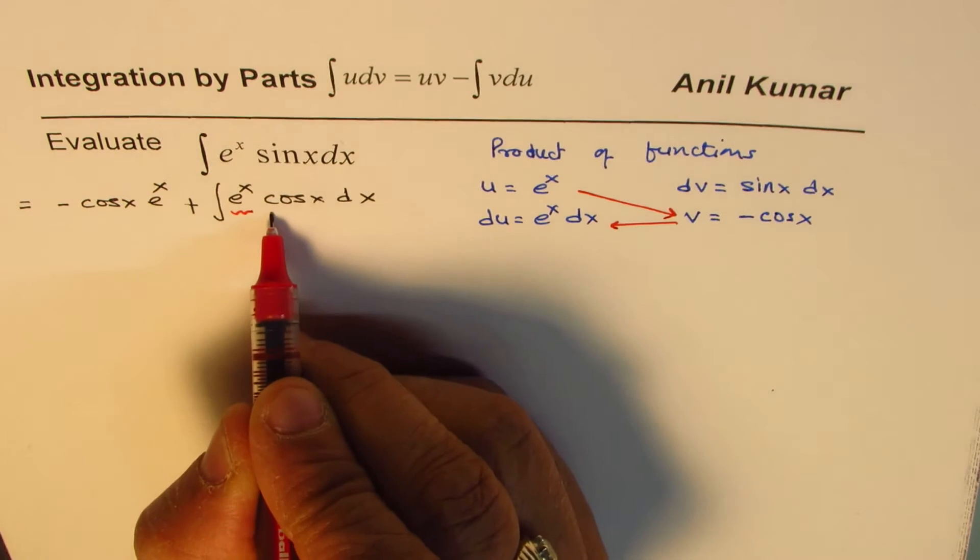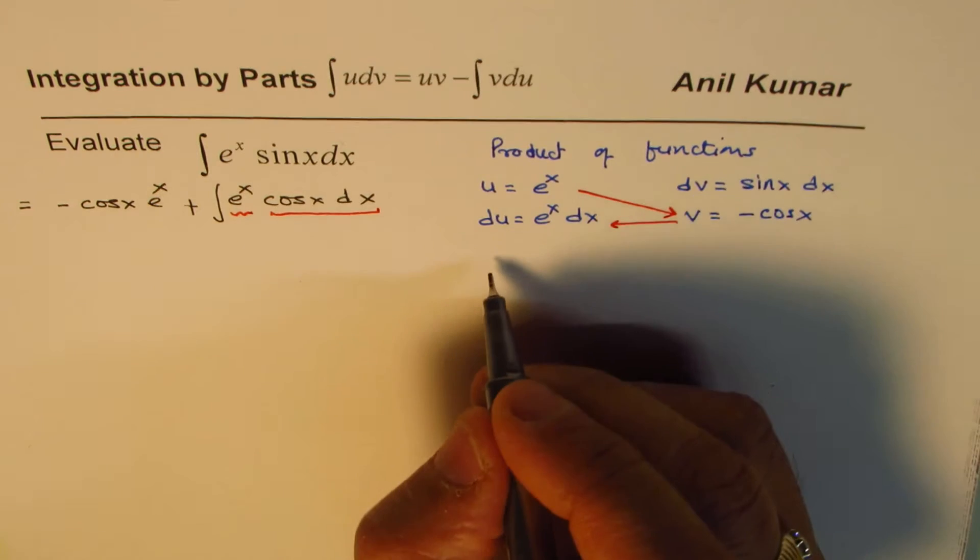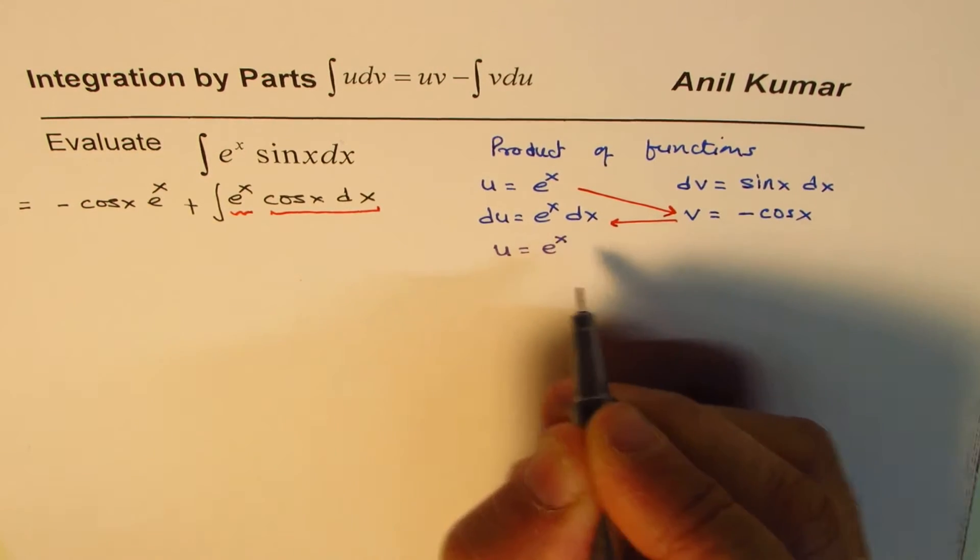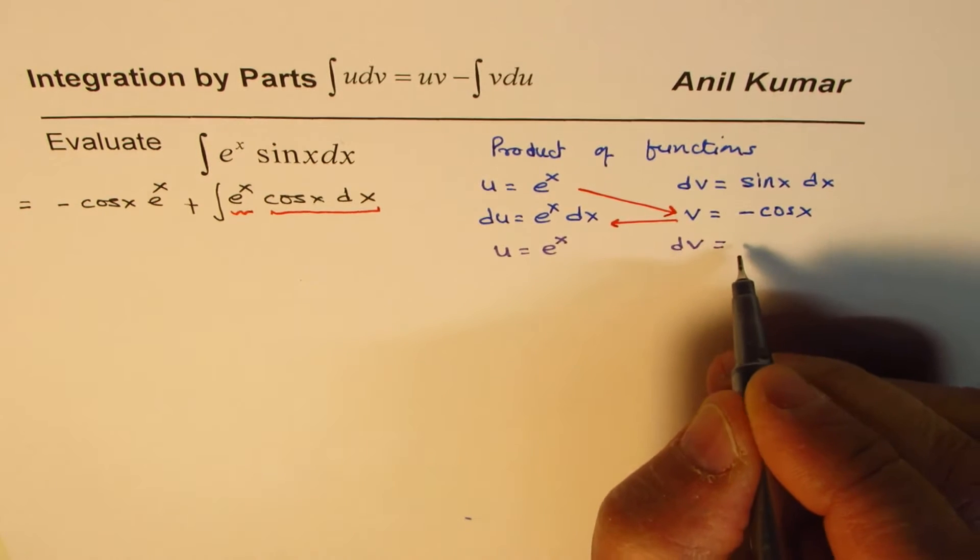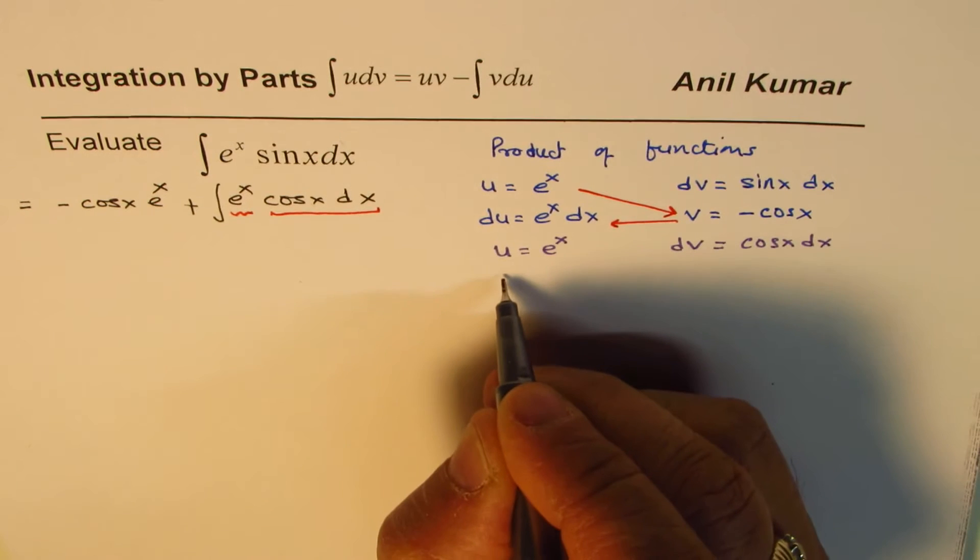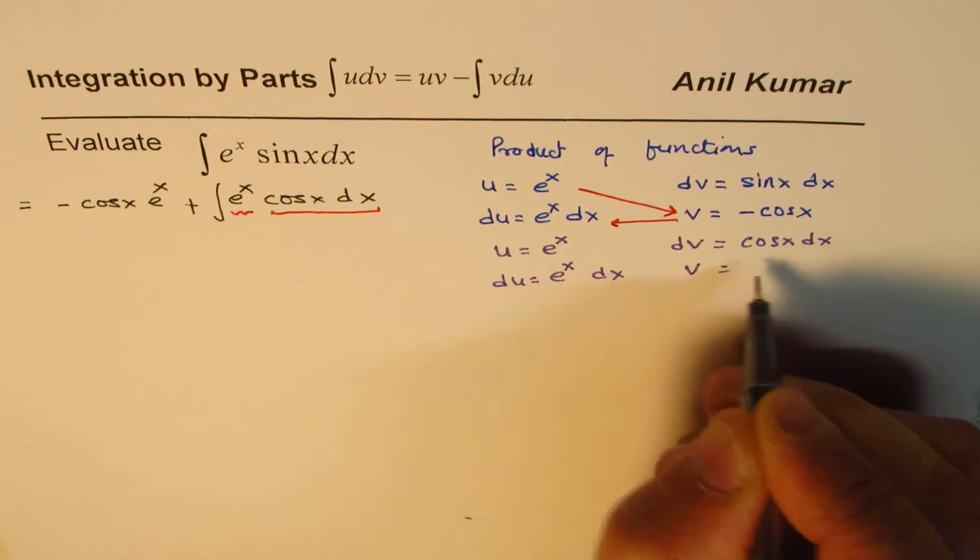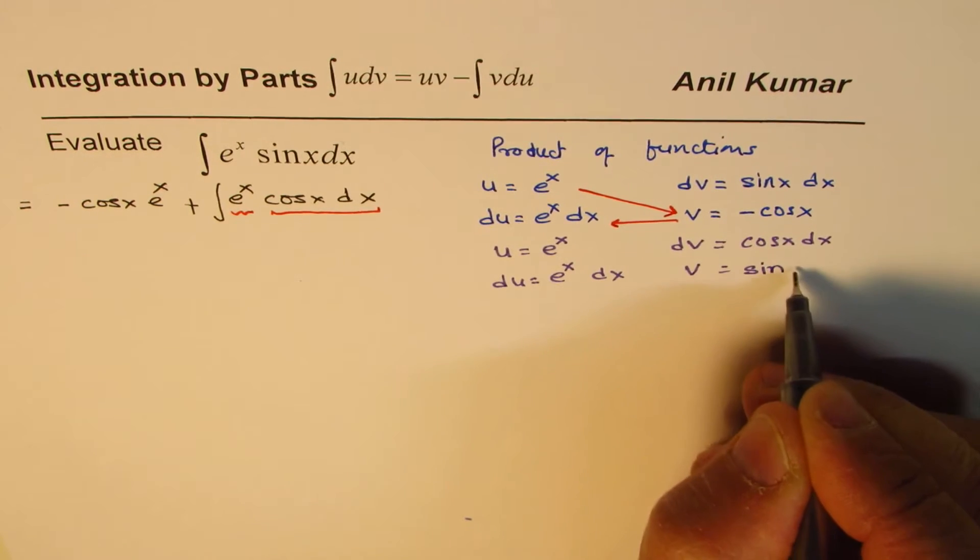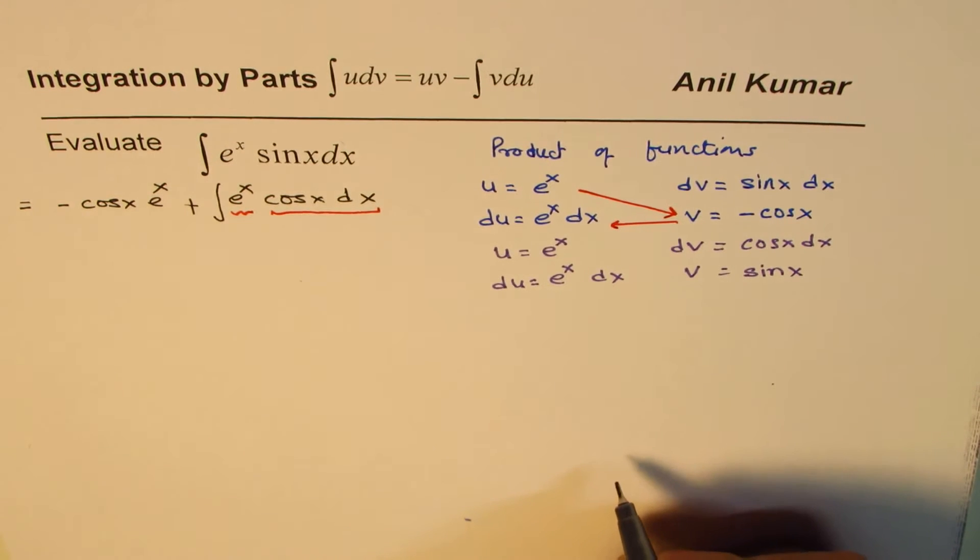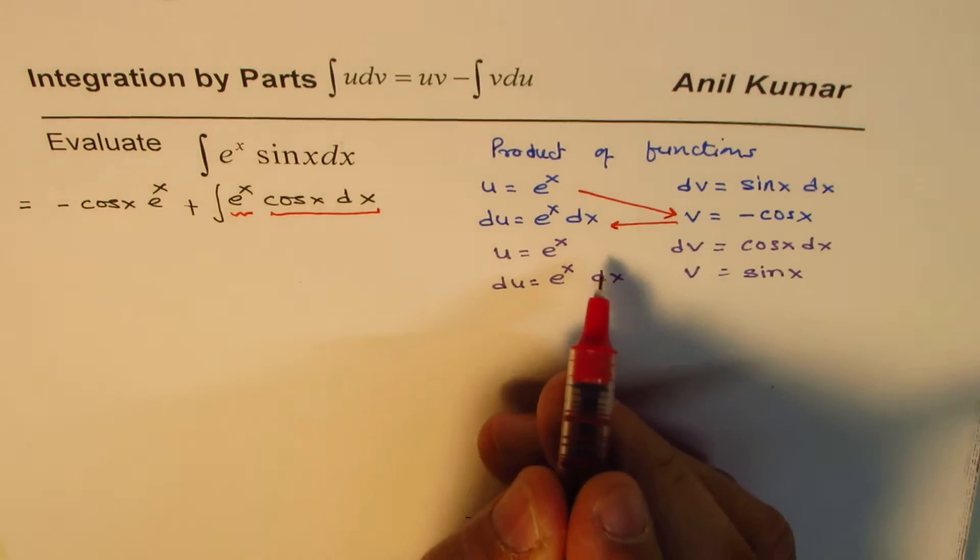This one we are looking into now. So again, we will do the same steps. Let me change the ink this time. So let's say this time u equals e to the power of x, and dv equals cos x dx. So we get du as e to the power of x dx, and v, after integrating this, gets sin x. So that is v, and we can again apply the rule, integration by parts.